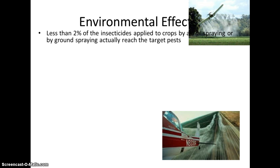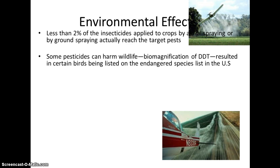Regarding environmental effects: if you look at that image of a plane spraying fields, only about 2% of that insecticide actually reaches the target pests. A lot is lost through evaporation and wind. The pesticide may still coat the plants, but insects aren't covering every single surface.